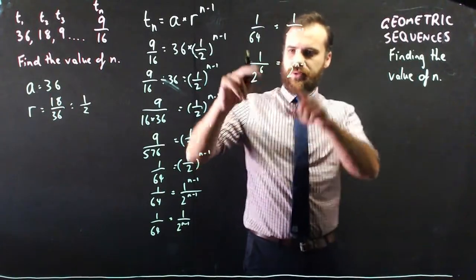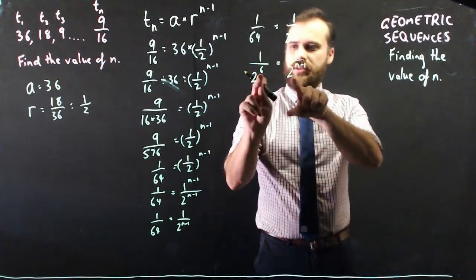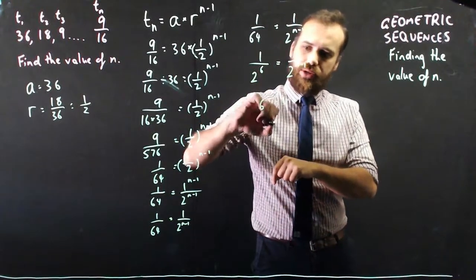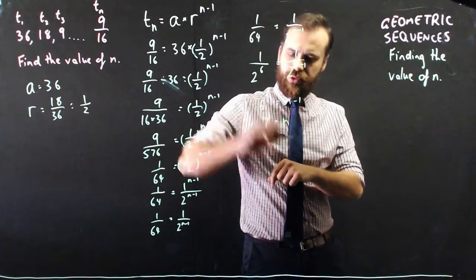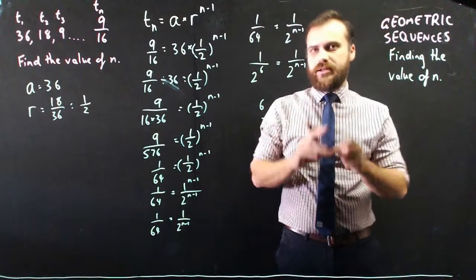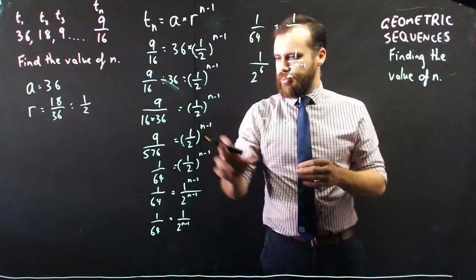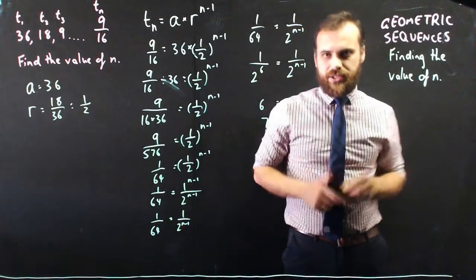Therefore, if 1 on 2 to the power of 6 equals 1 on 2 to the power of n minus 1, then this must equal this. So 6 must equal n minus 1, which means that n equals 7. Alright, that's a complicated question and there's a few little skills in there that you need. Probably the most important one is that equating bases idea.